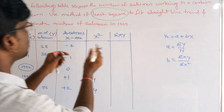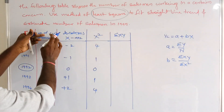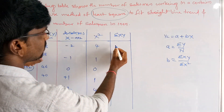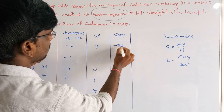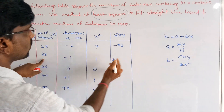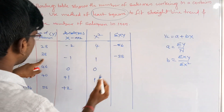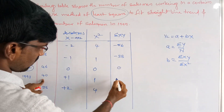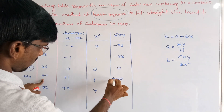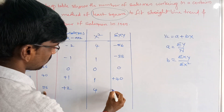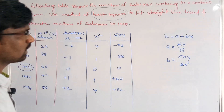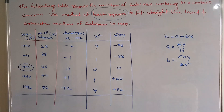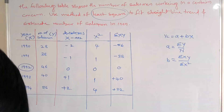For summation of xy, we multiply x and y values: (-2) × 28 = -56, (-1) × 38 = -38, 0 × 46 = 0, 1 × 40 = +40, and 2 × 56 = +112. These are the stable values we will sum.